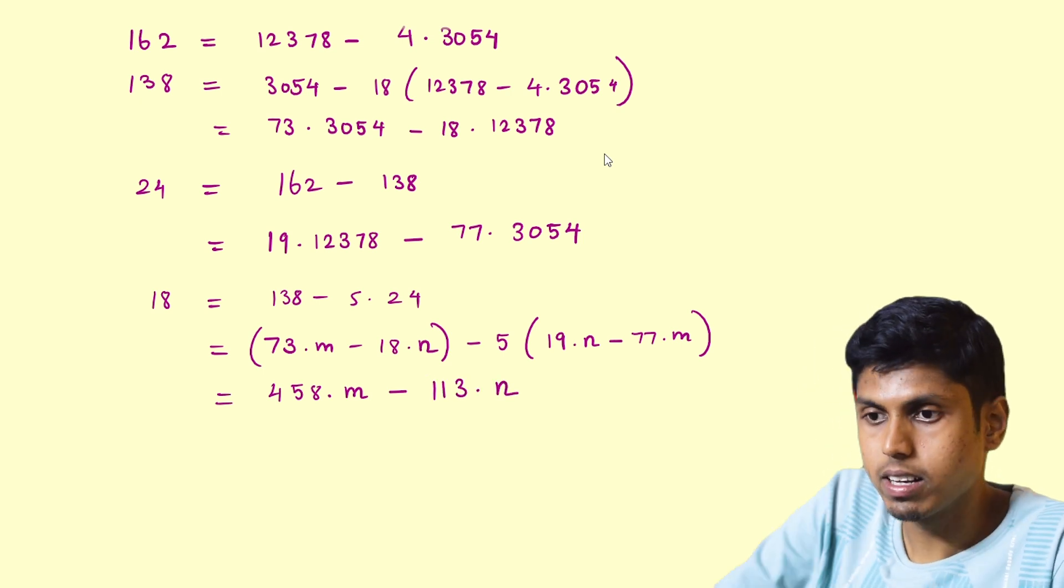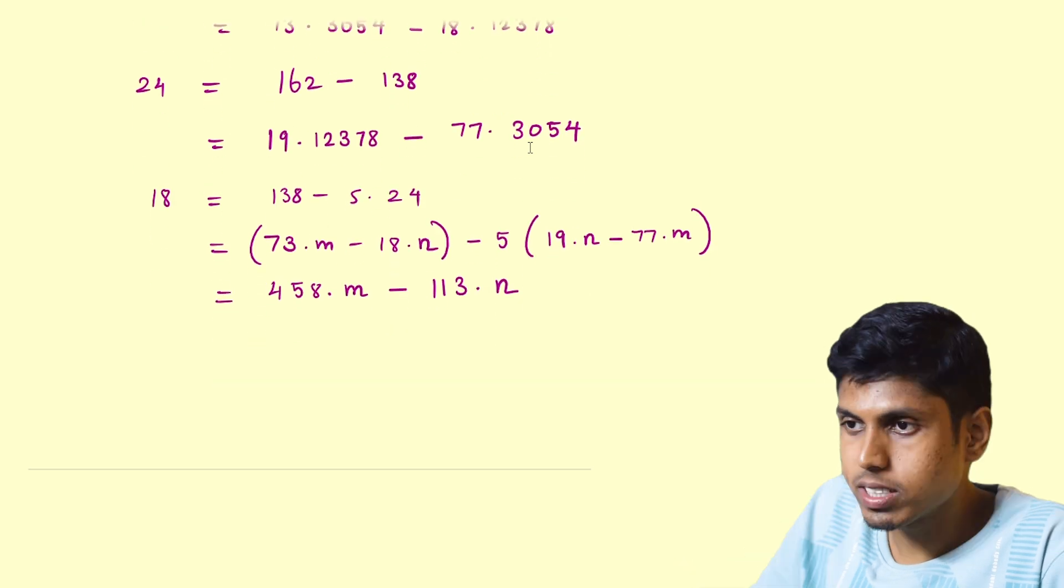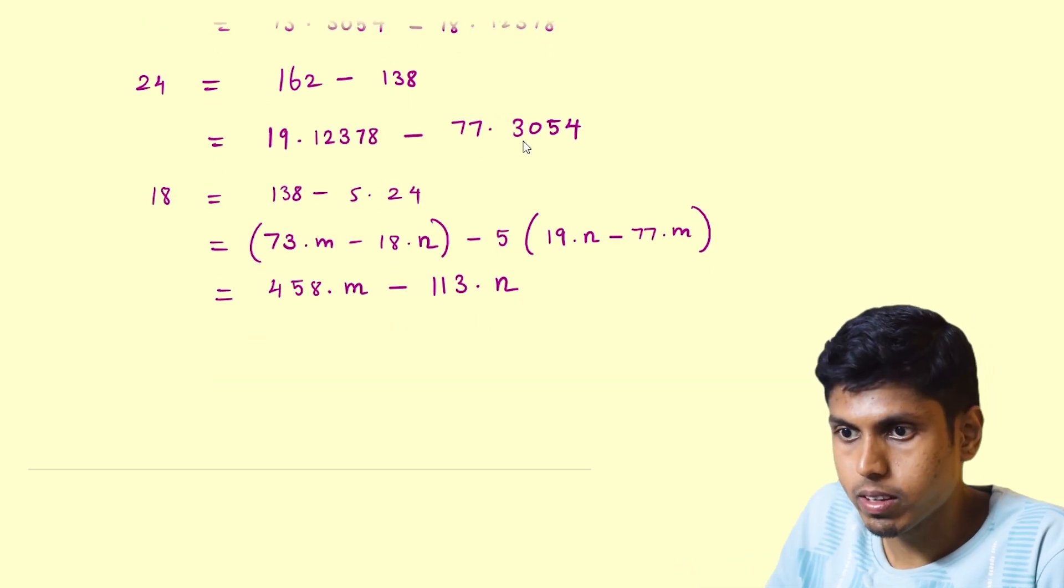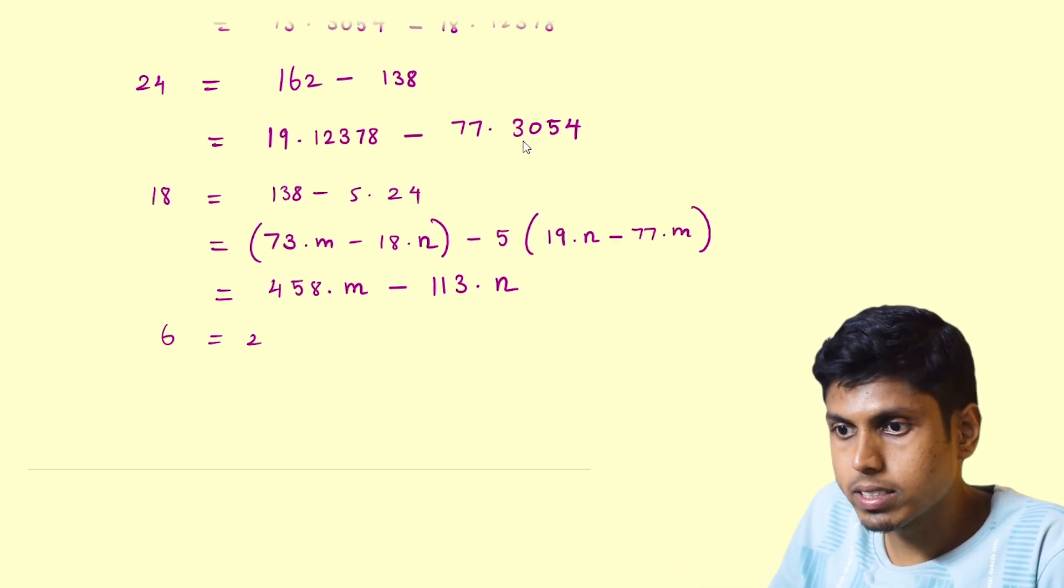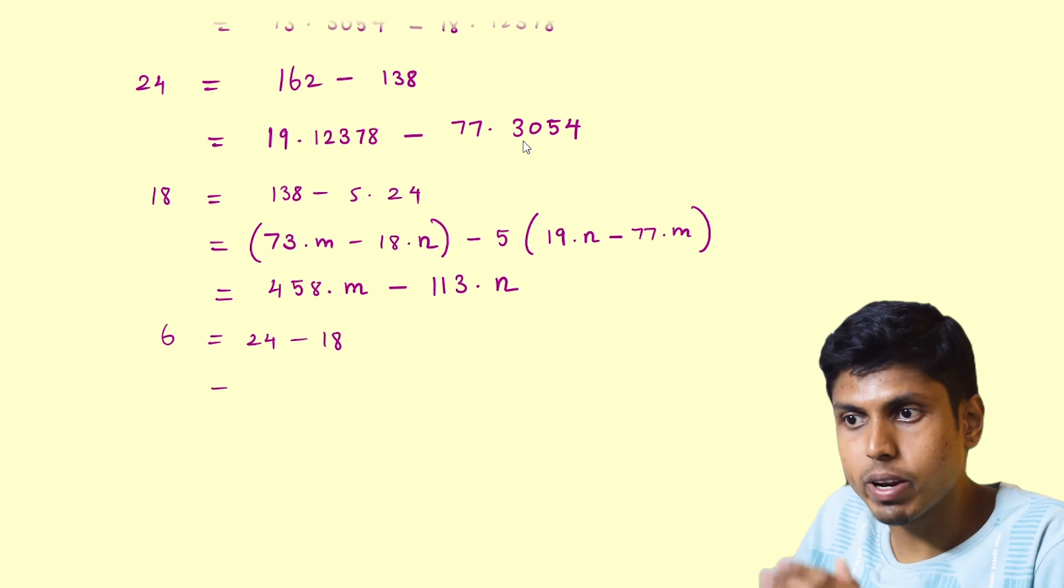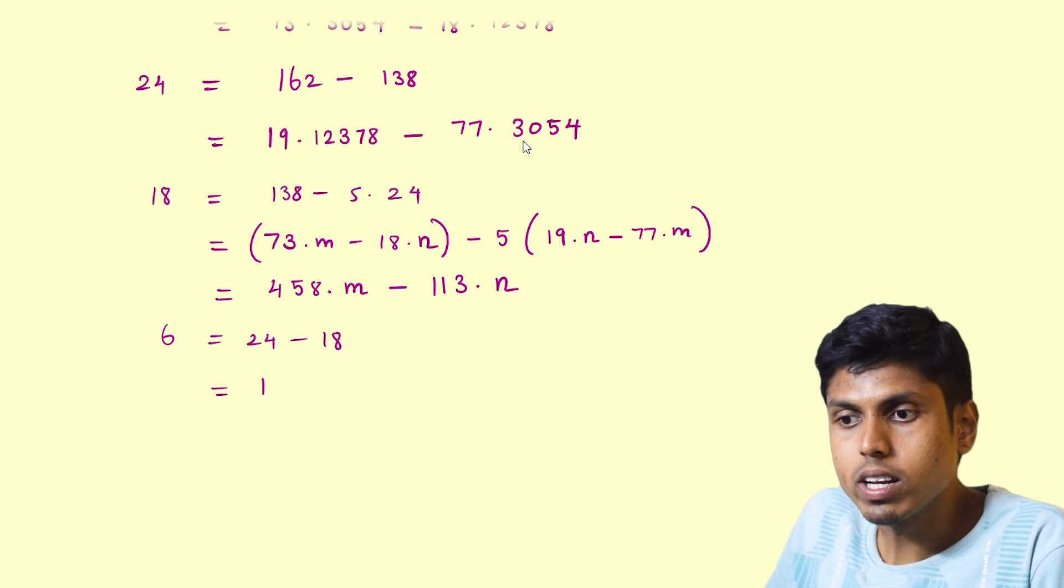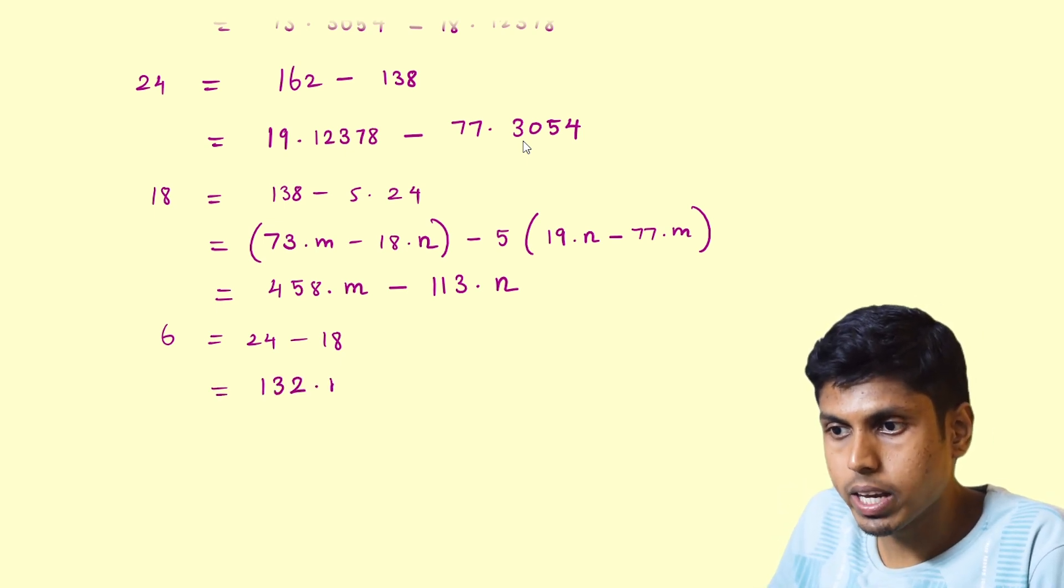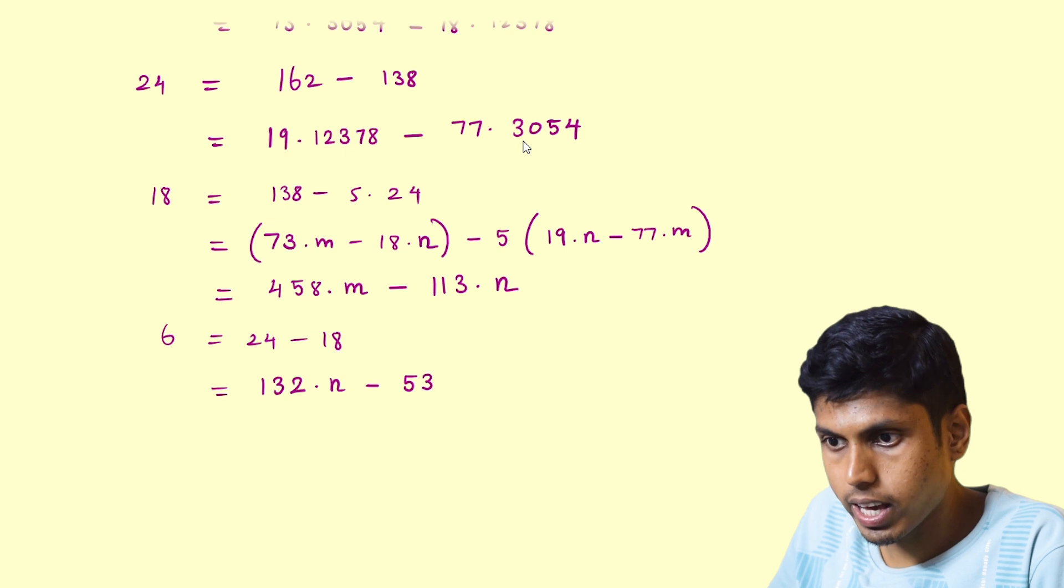So this is 18. Now we know that 6 is equal to 24 minus 18, so we just subtract these two. You would get 132n minus 535m.